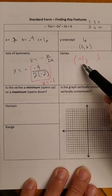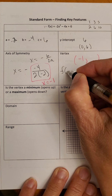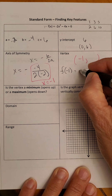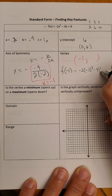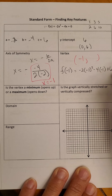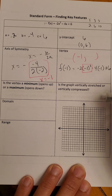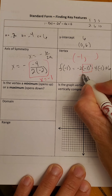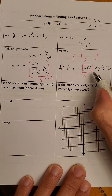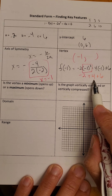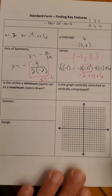That gives me the X-coordinate of my vertex — super important. To find the Y-coordinate, I find F of negative 1, meaning I plug negative 1 back into the original equation. So: negative 2 times negative 1 squared, minus 4 times negative 1, plus 6. Make sure you square first — negative 1 squared is positive 1, times negative 2 is negative 2. Negative 4 times negative 1 is 4, plus 6. Negative 2 plus 4 is 2, plus 6 is 8. So my vertex is (-1, 8).